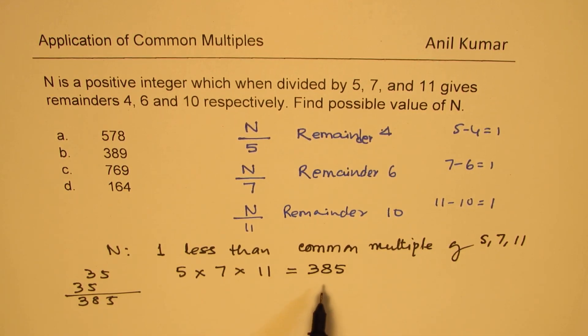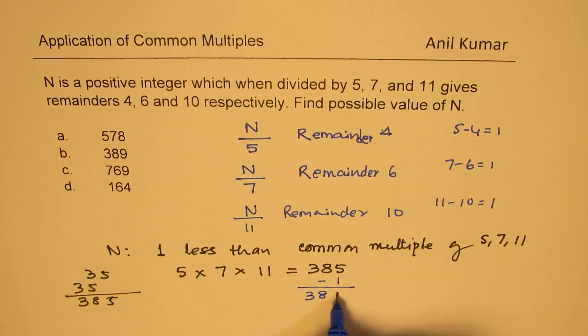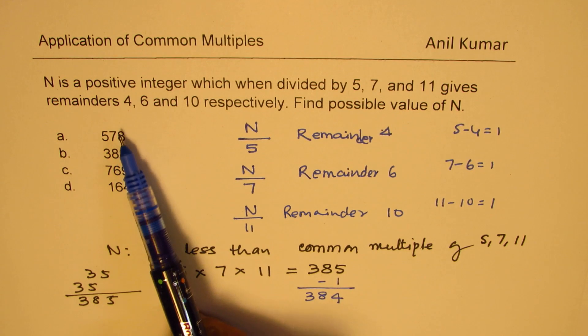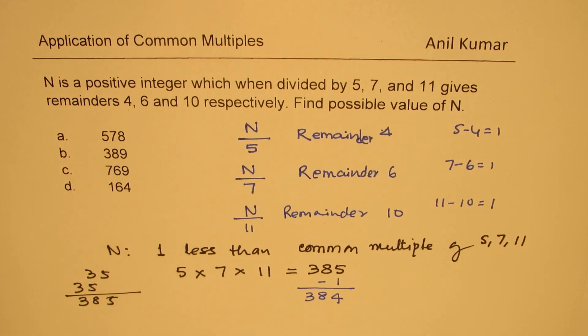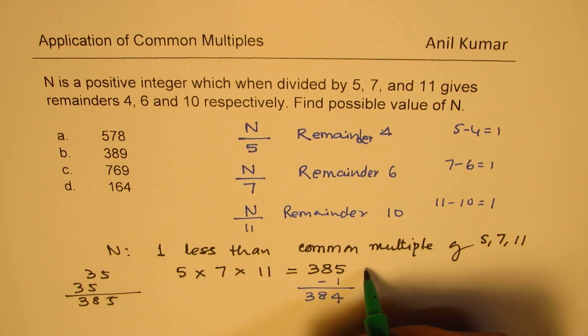So we are looking for answer which should be not 385 but minus 1, which is 384. However, we do not have that kind of a number here. We are 389. Now what to do? That's the question.